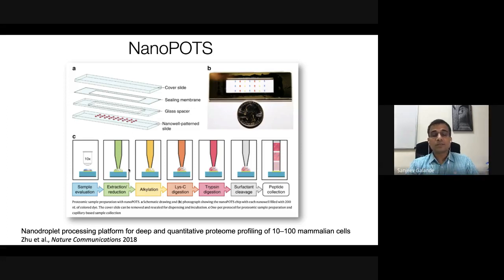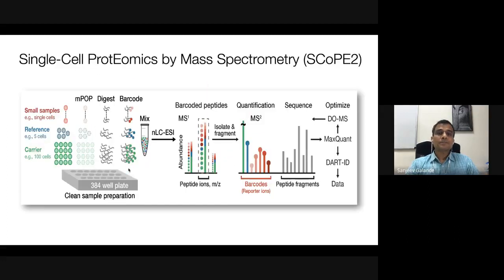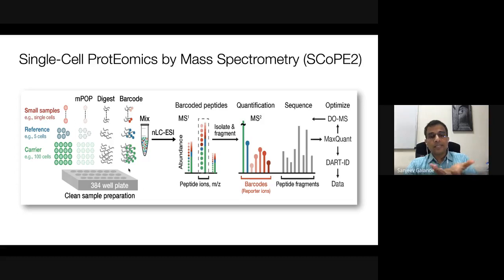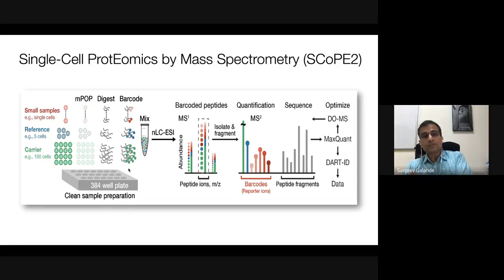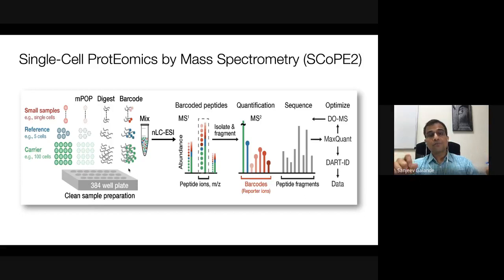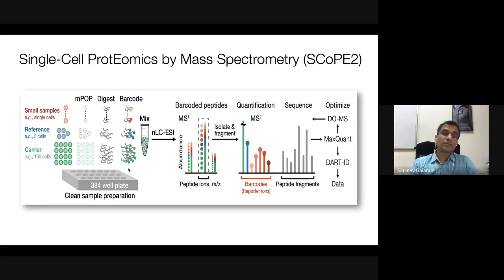Another platform for single-cell proteomics by mass spectrometry is SCoPE2. In very tiny nanowells, samples are prepared, barcoded, and the barcoded peptides are sequenced using mass spectrometry and quantified. Proteomics has been taken even further — as mass spectrometer sensitivity increases, you can detect very small amounts of protein, even from a single cell rather than a population of cells.